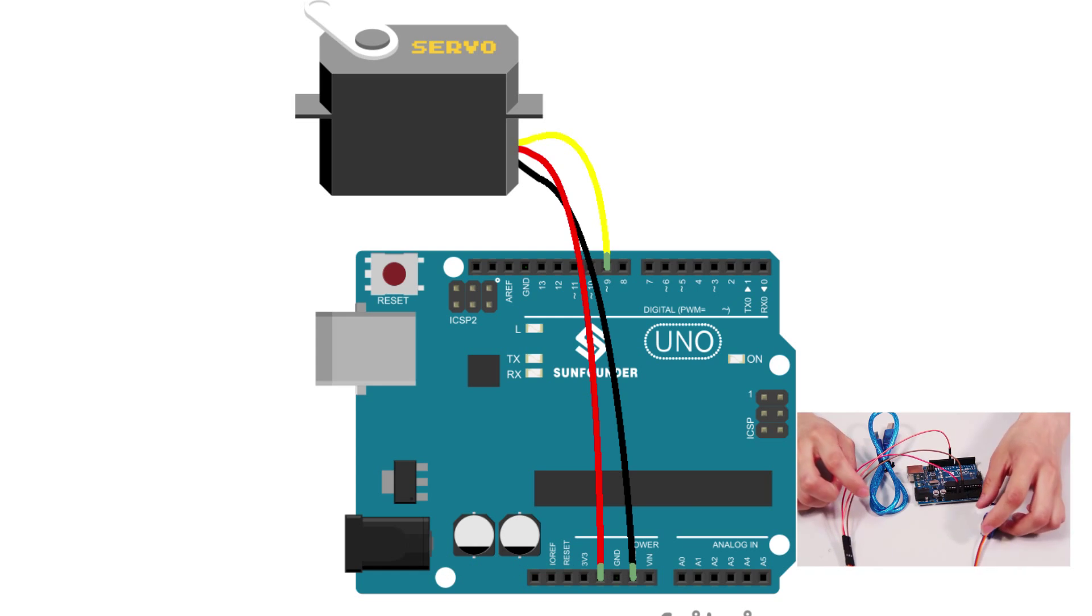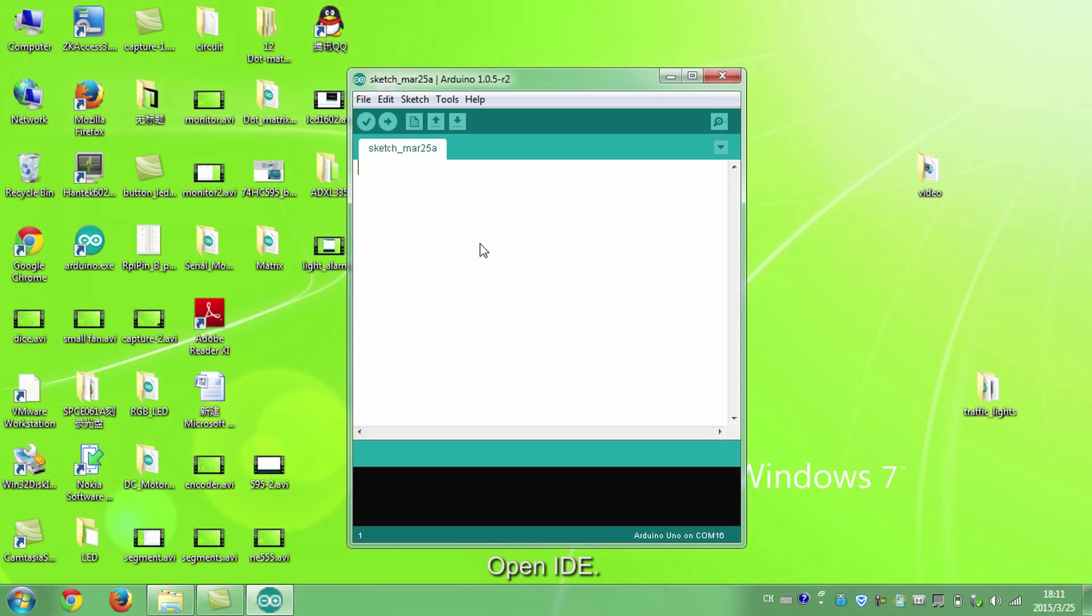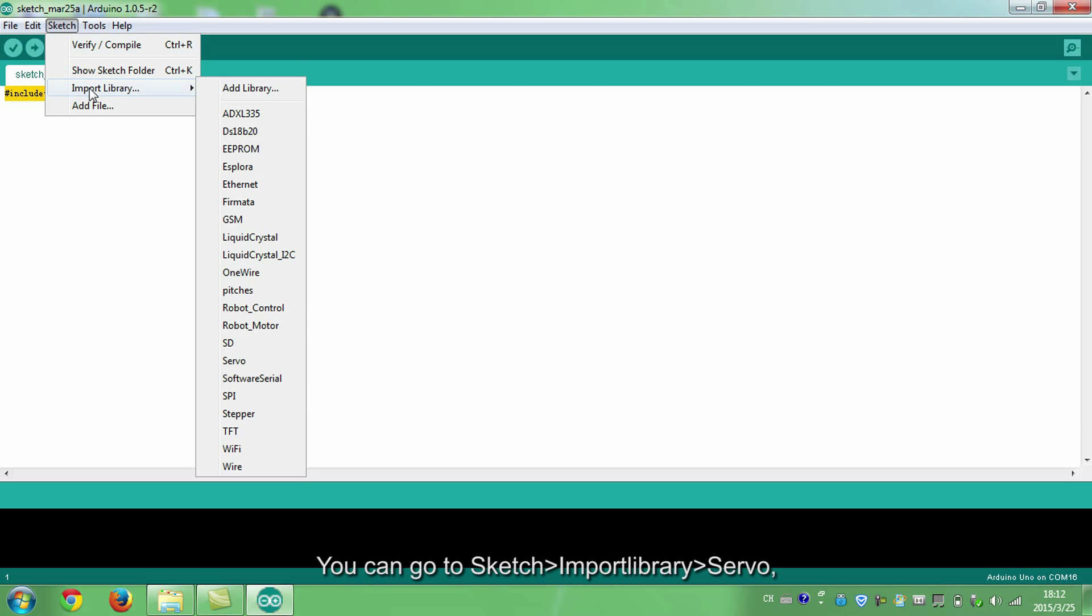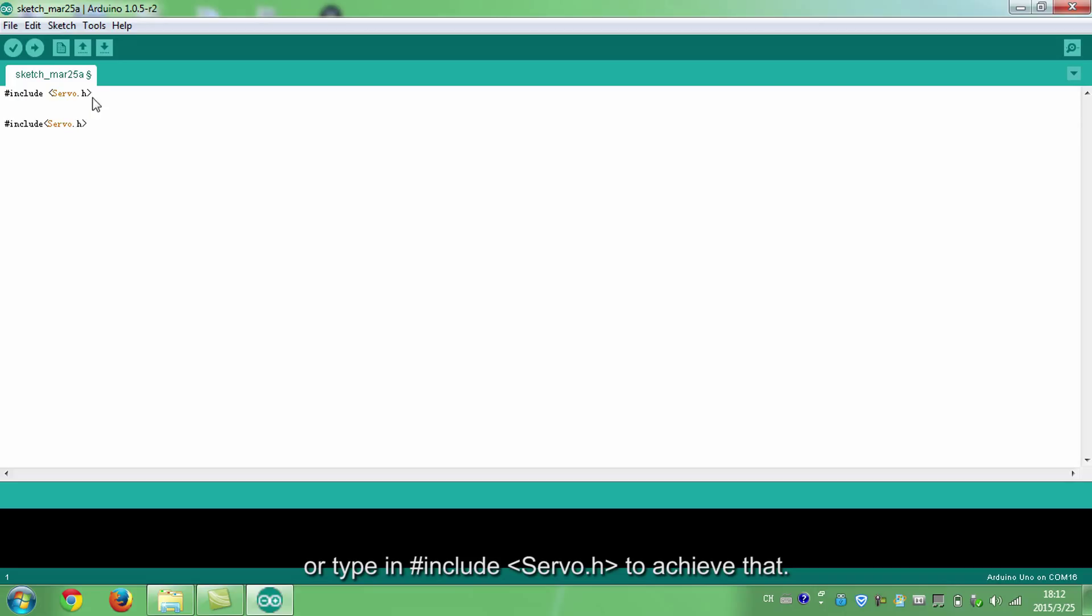Now the coding part. Open IDE. Define the header file. You can go to sketch, import library, servo, or type in include servo.h to achieve that. But remember to type in the space between include and servo.h or there will be errors during the compiling.